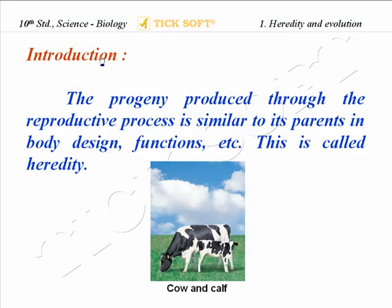Moving on to the introduction of the unit: the progeny produced through the reproductive process is similar to its parents in body design, function, etc. This is called heredity. The progeny refers to the next generation individuals. Here is a figure representing a cow and a calf — we are able to see the external morphology of the calf exactly alike, the same as the cow.